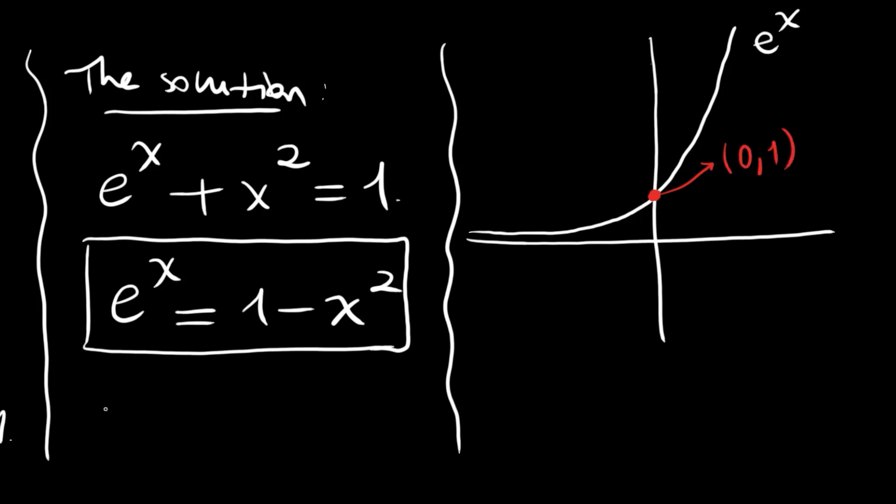For e^0 and 1 - 0^2, and this right hand side 1 - x^2 is a parabola that will look like this. So one intersection point is already found: (0, 1).